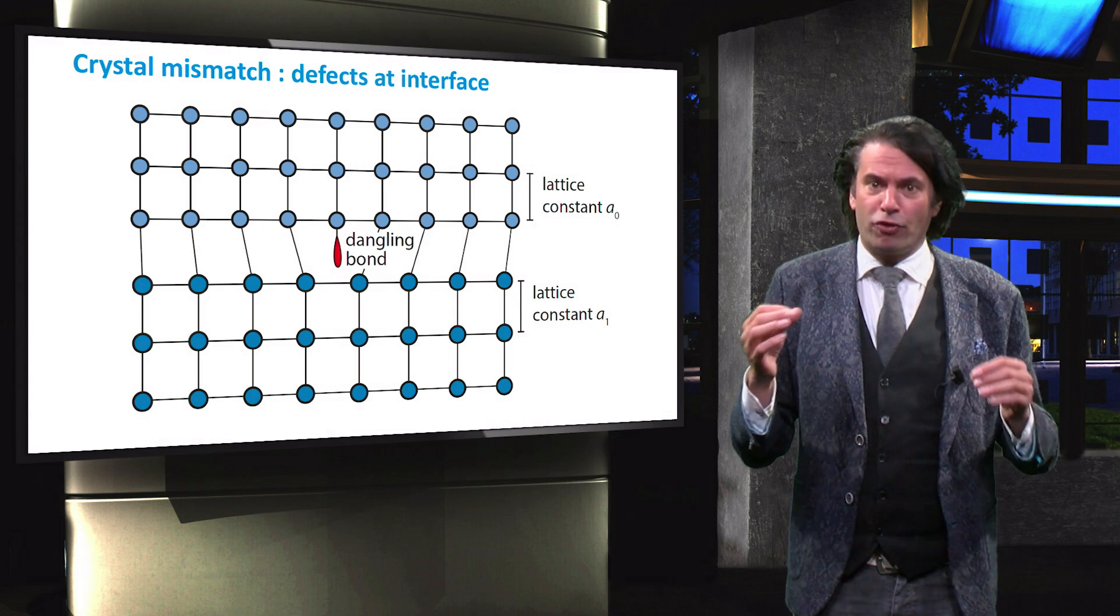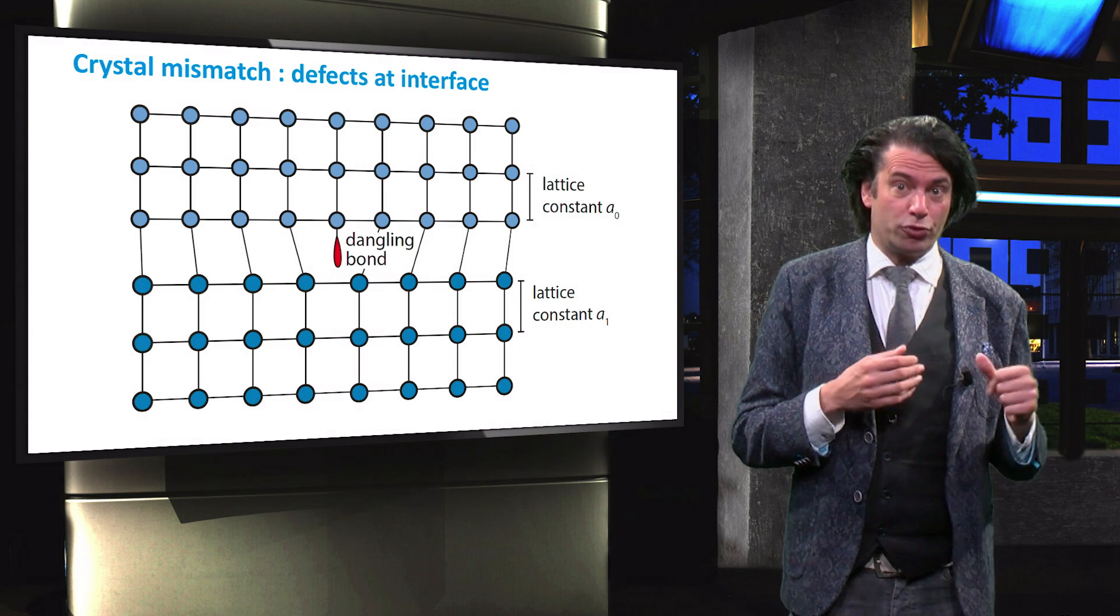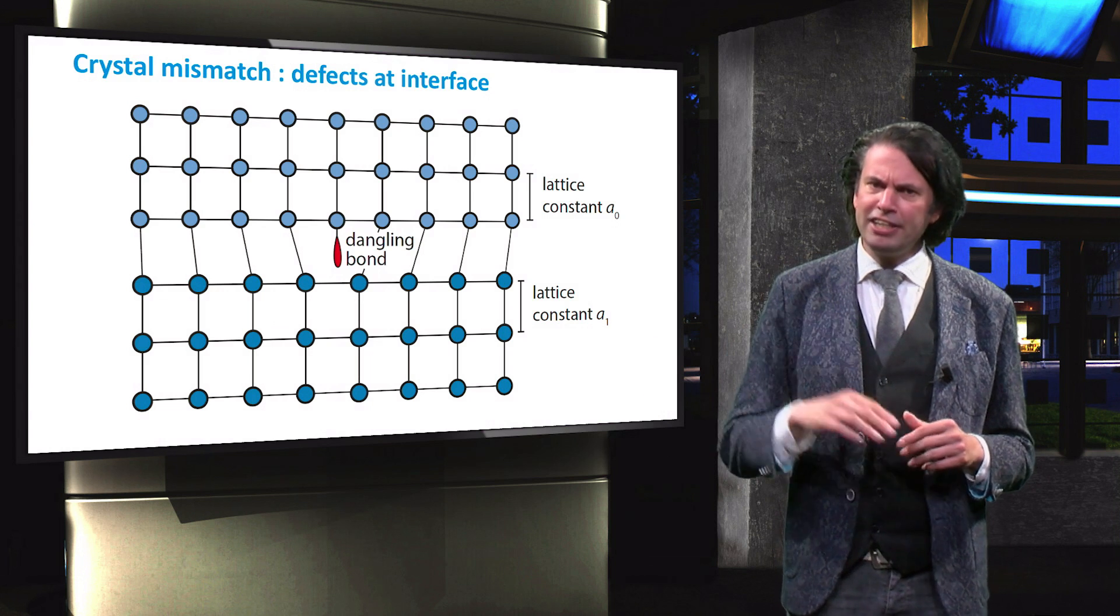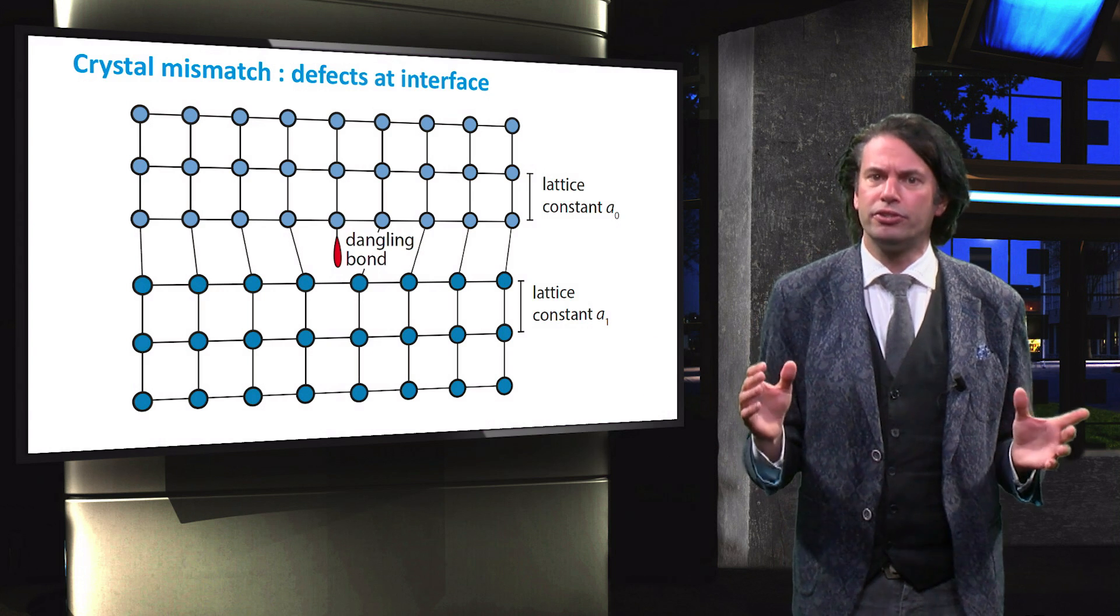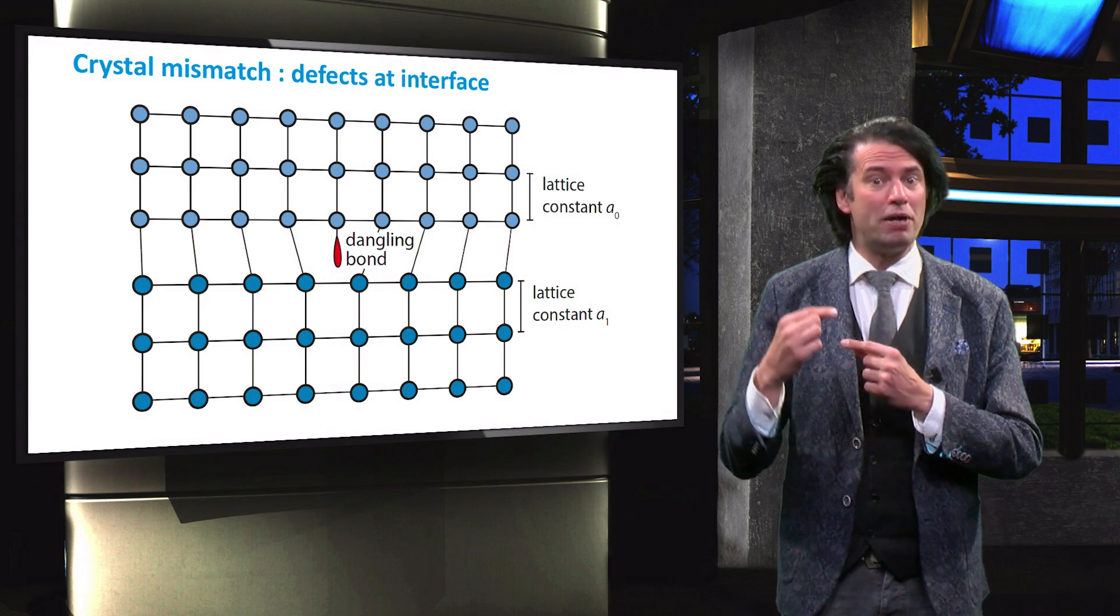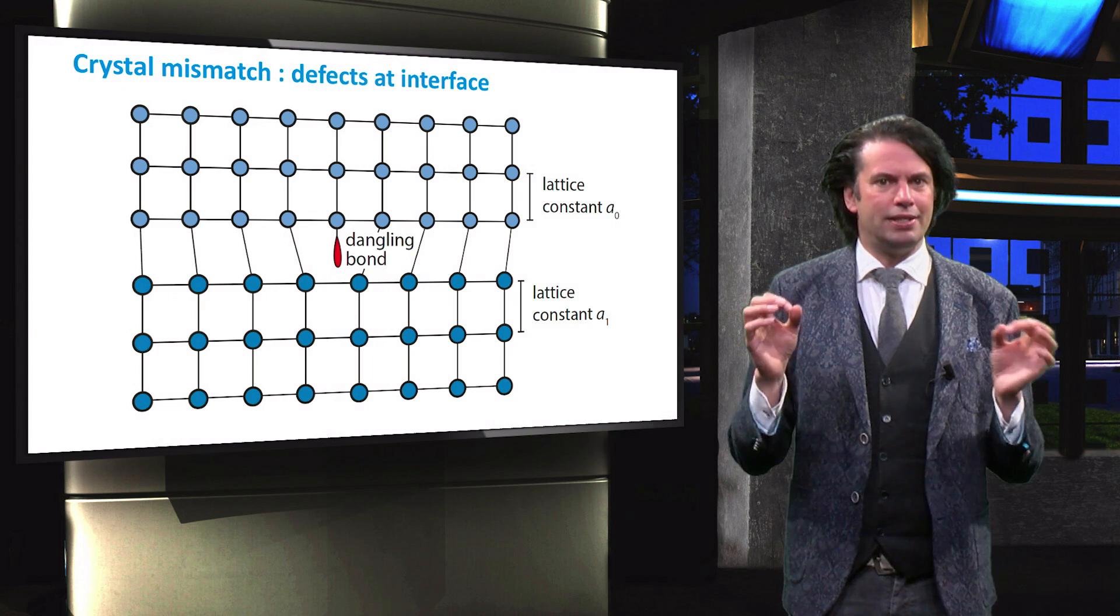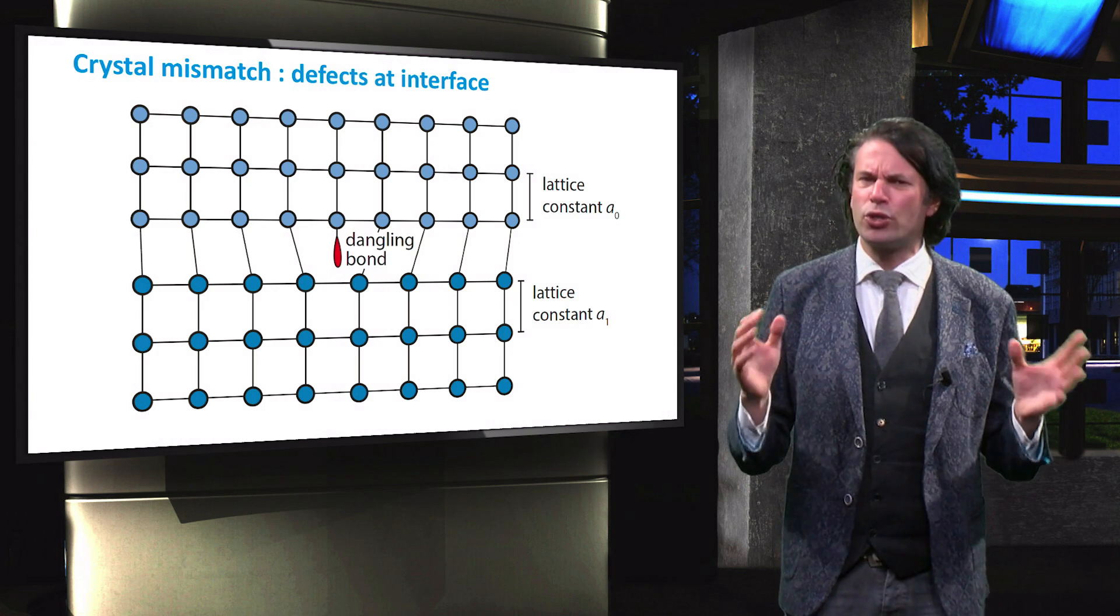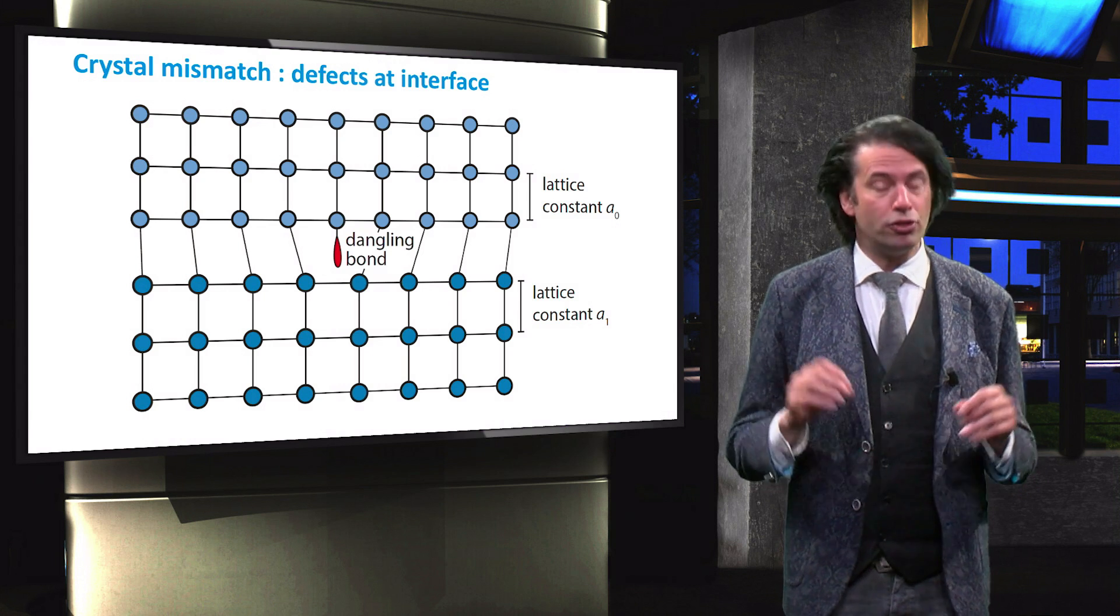These materials might for instance be gallium phosphide grown on top of gallium arsenide. The interface between these two materials is strained and not every valence electron at the interface is able to make a bond with a neighbor. These dangling bonds are defects that significantly increase the Shockley-Read-Hall recombination of the device.